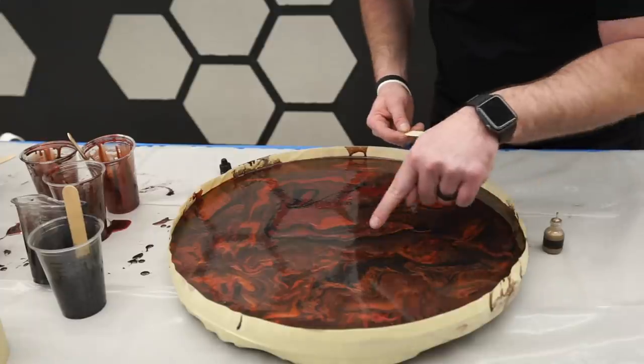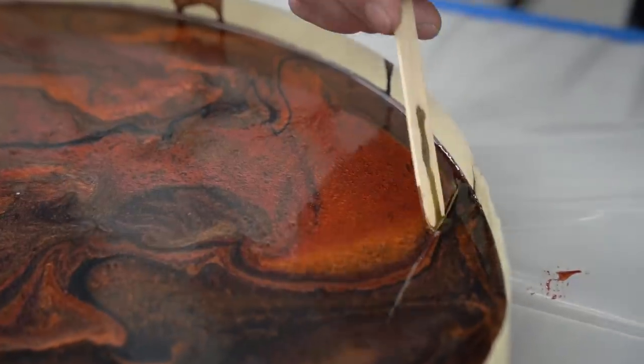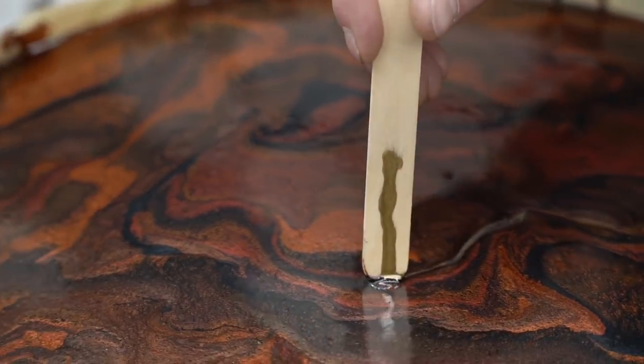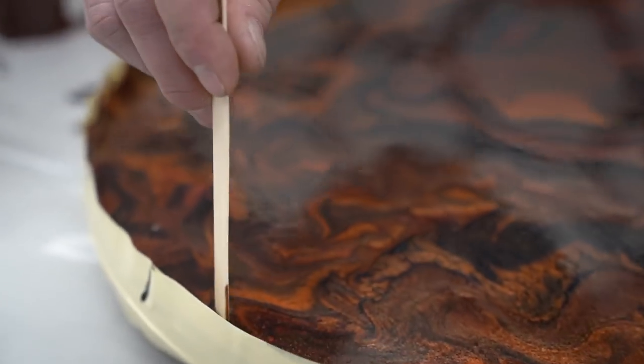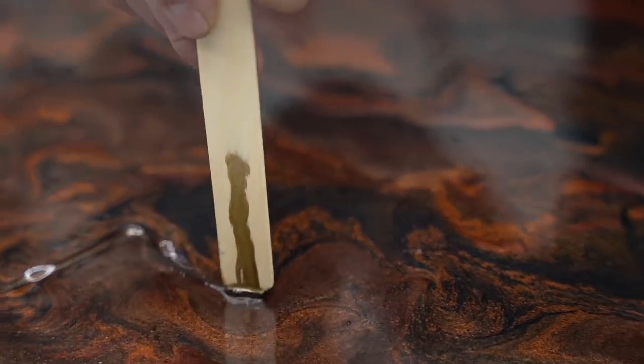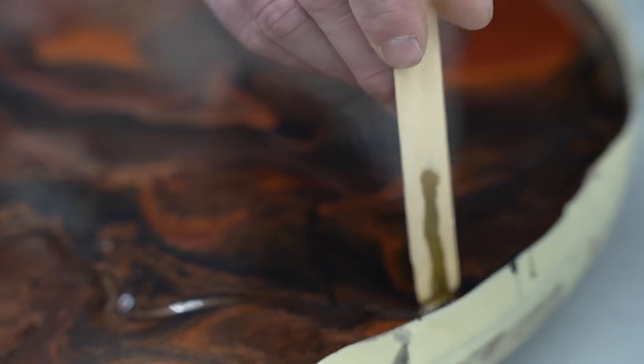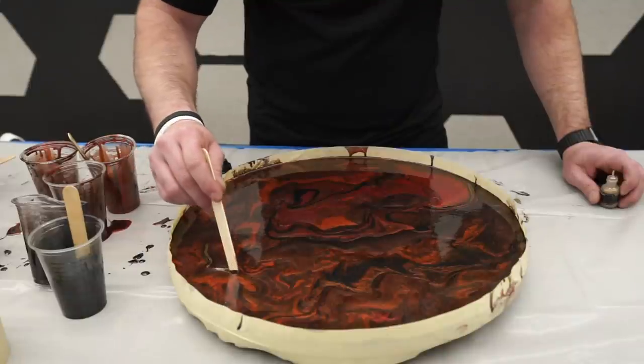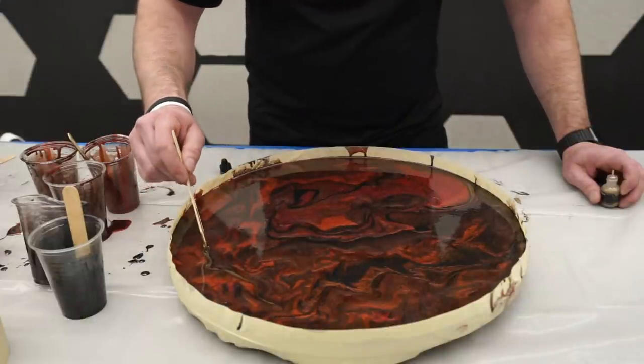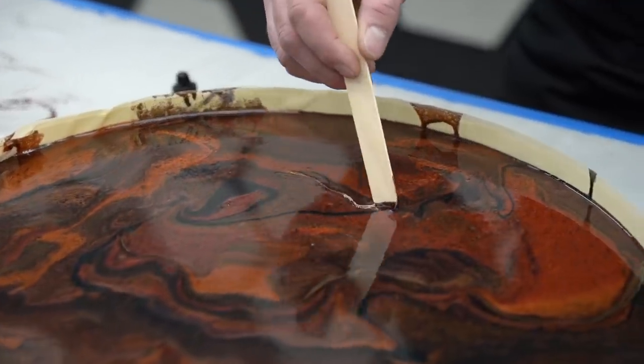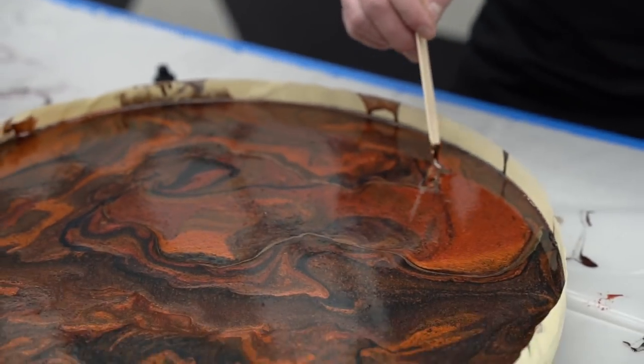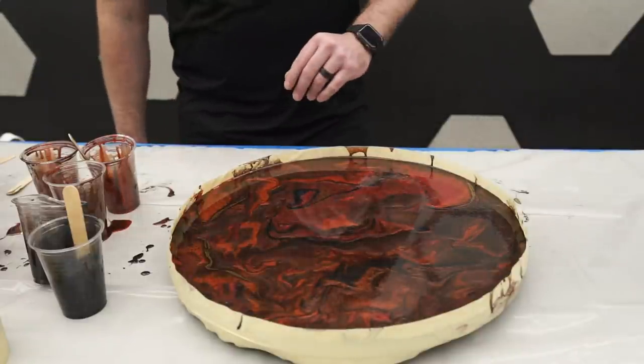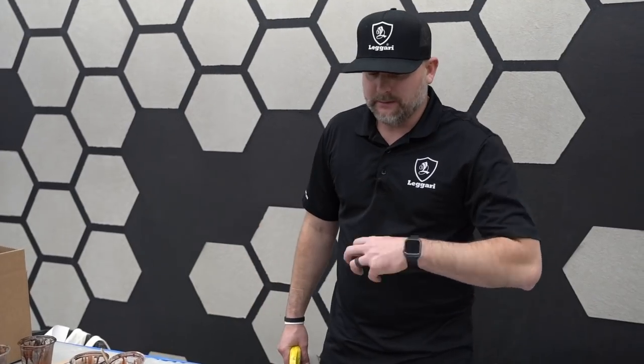And when I'm doing it, I'm just trying to follow some of these fracture veins that are already out here. Let that drip off, give it a little tap. All right, guys, last thing, we're going to mist this with the denatured alcohol. That's going to help level everything out.